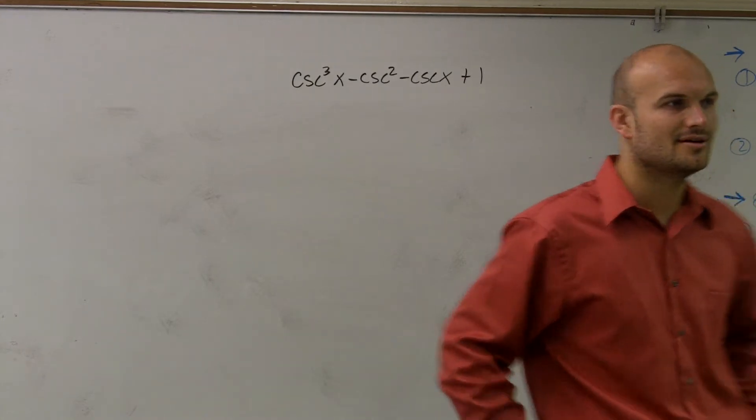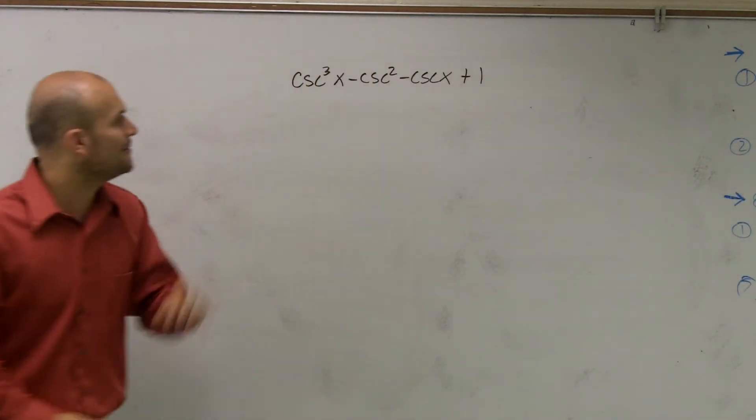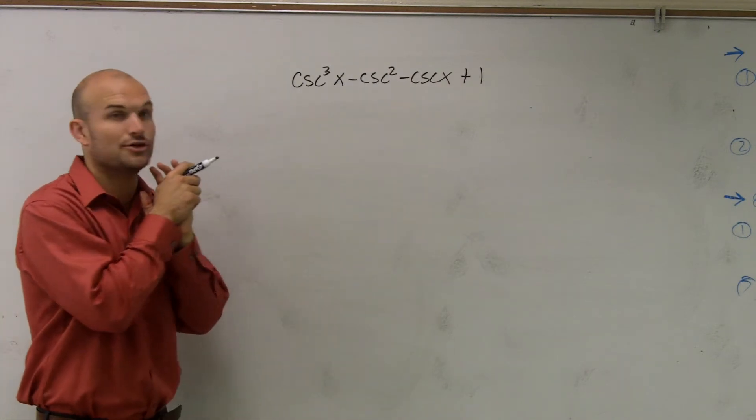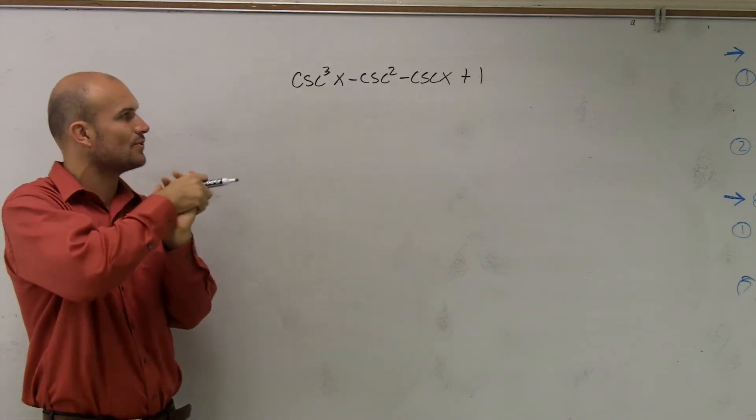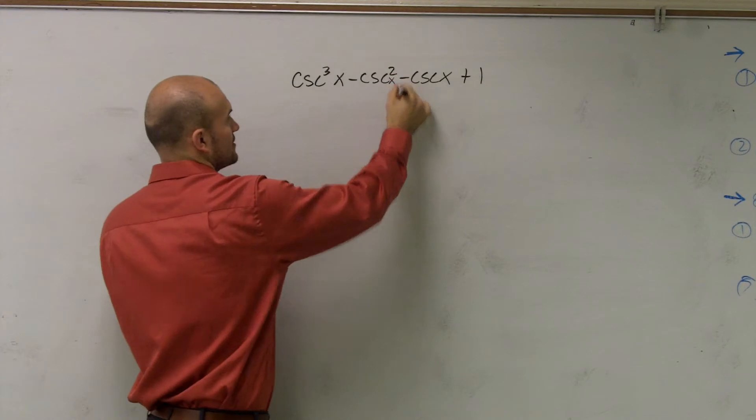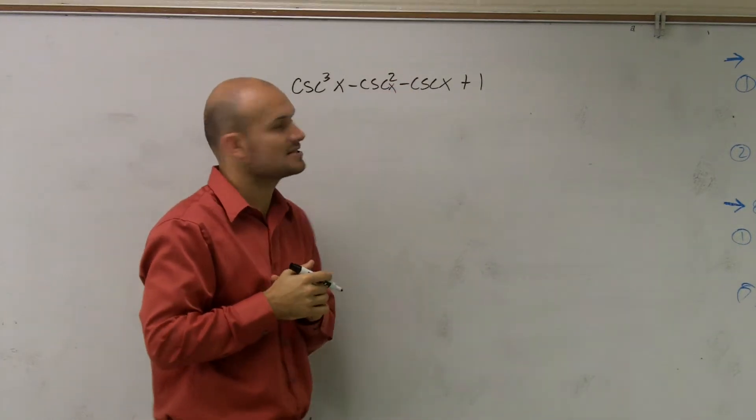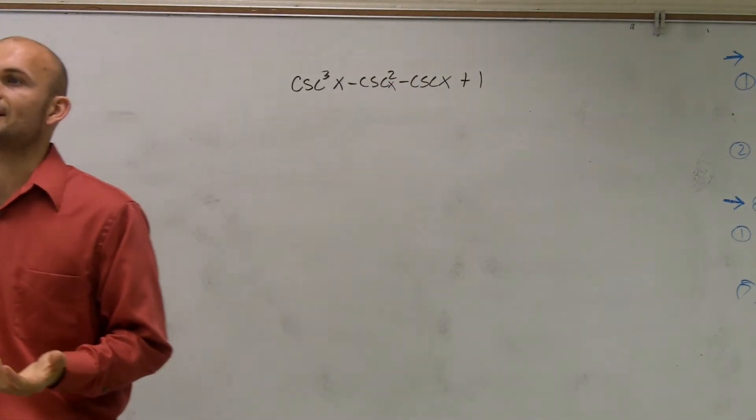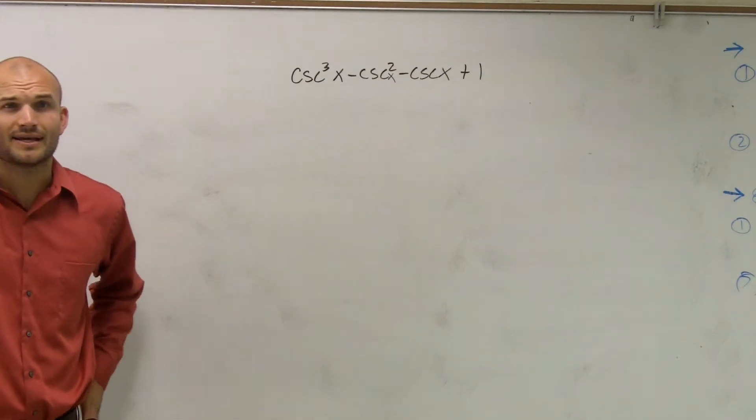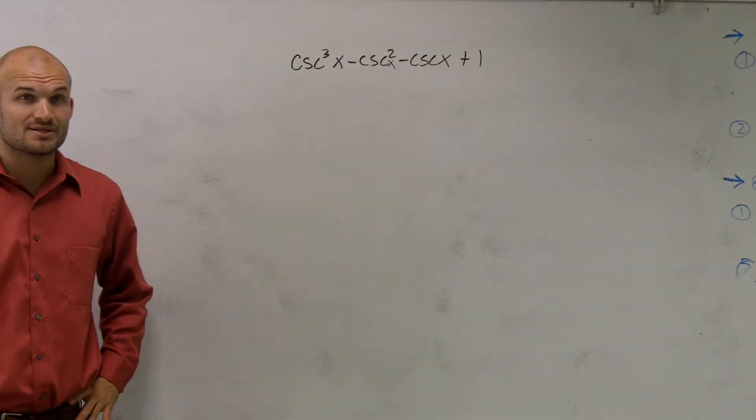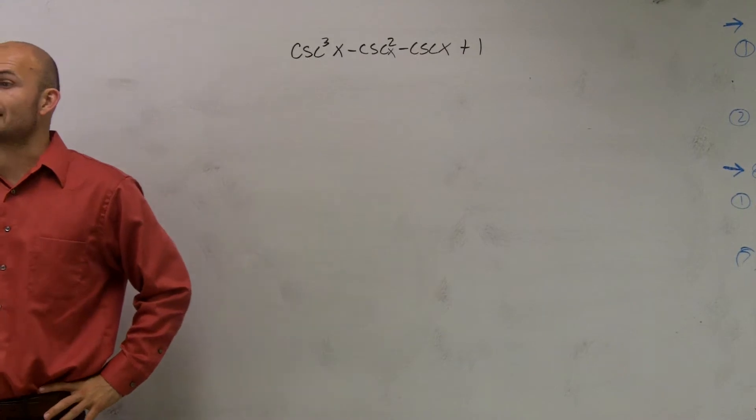So we have cosecant cubed of x minus cosecant squared of x minus cosecant of x plus 1. So when it tells us to factor this, the one thing that I'm automatically thinking is if I see four terms, I've got to automatically think factor by grouping.